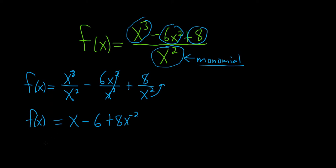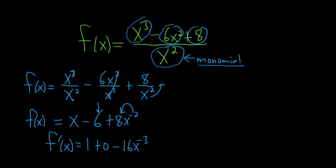Now we're ready to take the derivative. So f prime of x: the derivative of x is 1, the derivative of negative 6 is 0. And here we use the power rule, so negative 2 times 8 is negative 16, and we subtract 1, so we get negative 3. This will be equal to 1 minus 16x to the negative 3. Went through that pretty quickly, so let me just pause and go through it one more time.